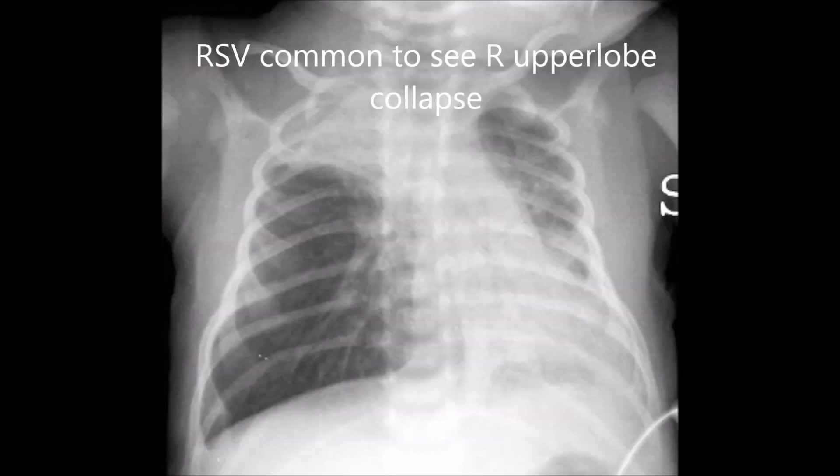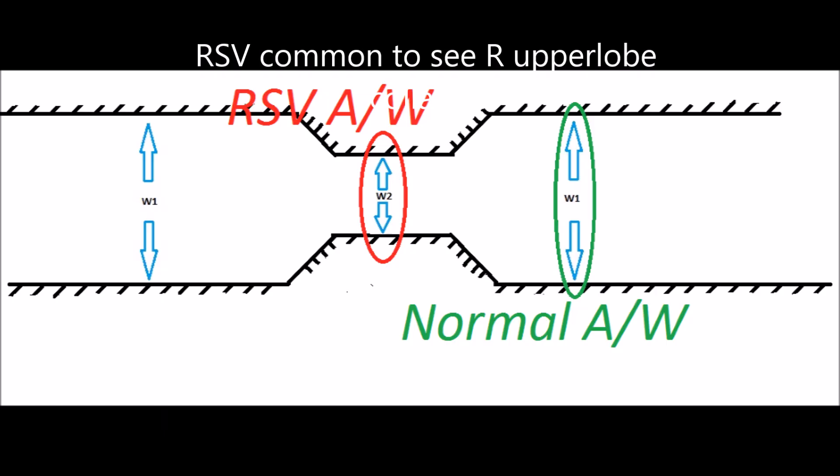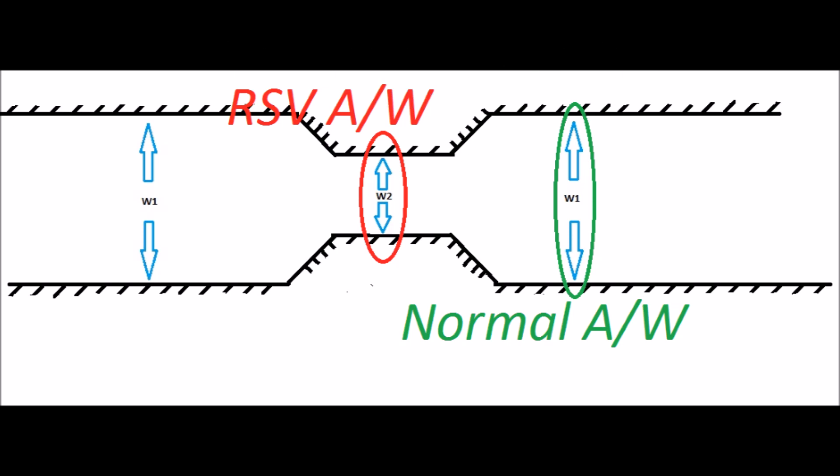If they're less than two years old, they may be readmitted with RSV, since they're more prone to getting infections — their airways are already compromised and they don't have the ability to exhale or inspire properly.